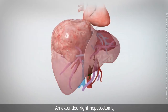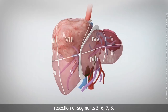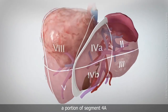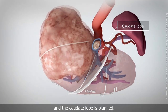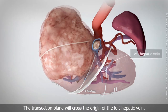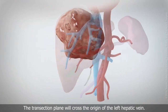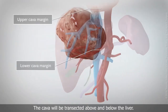An extended right hepatectomy — resection of segments 5, 6, 7, 8, a portion of segment 4A, and the caudate lobe — is planned. The transection plane will cross the origin of the left hepatic vein, and the cava will be transected above and below the liver.